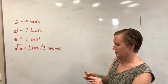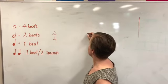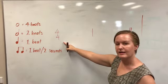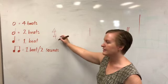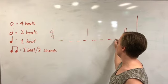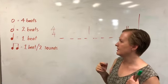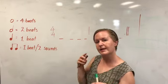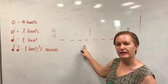What we need to do is set up a couple of bars with bar lines, and in each bar there are going to be four beats. I'll draw some lines to represent those four beats, and what I'm going to do is choose these notes, mix them up, and your job is to work out the order.